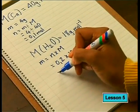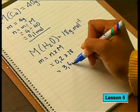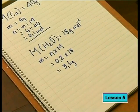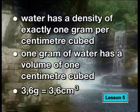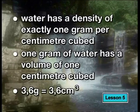We can calculate the mass of water using the equation m = n × M. You should know that grams is not a unit of volume, so we need to convert our answer. Because we're working with water, there's a very useful relationship: water has a density of exactly 1 g/cm³, meaning 1 gram of water has a volume of 1 cm³. So 3.6 grams of water will have a volume of 3.6 cm³.